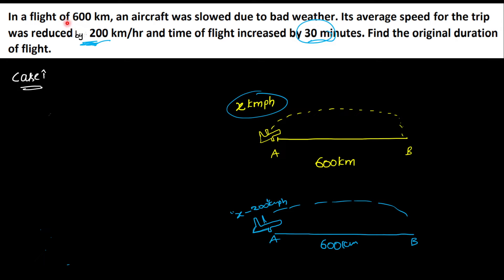In a flight of 600 km, an aircraft was slowed due to bad weather. Its average speed for the trip was reduced by 200 km per hour. So the initial speed was reduced by 200 km per hour.